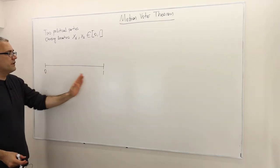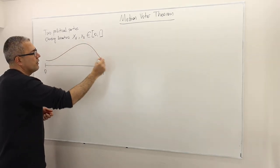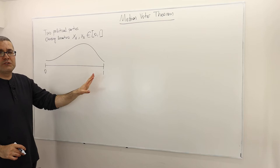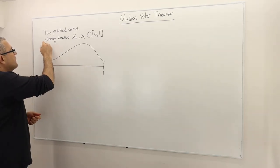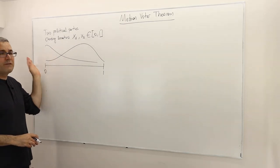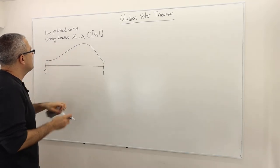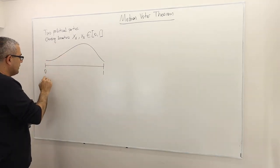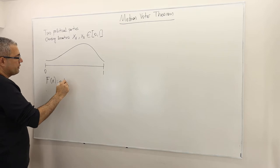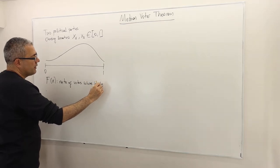The voters are distributed over this 0 to 1 interval, not necessarily uniformly — according to some probability distribution. For example, if this is the probability distribution, the majority of the voters are more conservative. And if this is the distribution, the voters are more leftist. So any probability distribution would be fine. Let's suppose f of x denotes the proportion of voters whose ideology location is less than or equal to x.